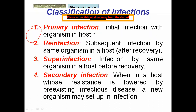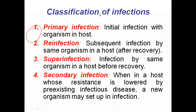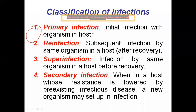The first type is primary infection, which is the initial infection with an organism in the host body. For example, when the novel coronavirus enters the host organism for the first time, that is the initial infection — and because it is the first time, it is called primary infection.